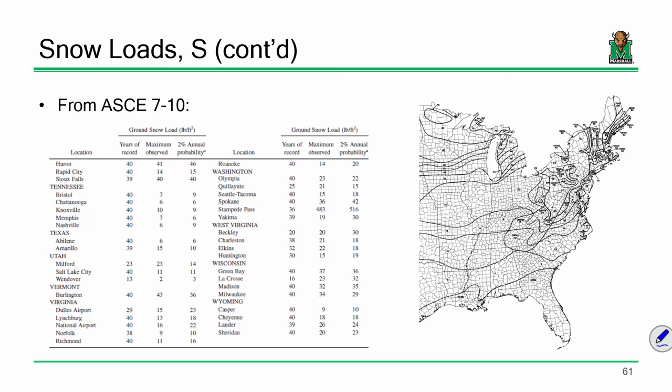For instance, if you look at Burlington, Vermont — there's been 40 years of record. The maximum observed snow is 43 pounds per square foot, but from a design standpoint, using the 2% annual probability, our design value is going to be 36 pounds per square foot. And look at something like Stampede Pass, Washington — 516 pounds per square foot. That's a lot of snow.